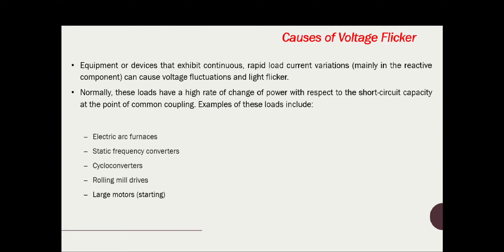Normally, such loads have a very high rate of change of power with respect to the short circuit capacity at the point of common coupling (PCC). Examples of such loads are electric arc furnaces, static frequency converters, cycloconverters, rolling mill drives, and large motors. Whenever this kind of load is present in your feeder, it will definitely cause large variation in load current, resulting in voltage fluctuation that reflects as voltage flicker in your lighting system.